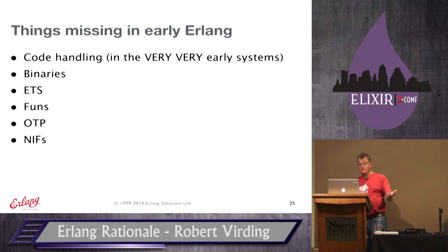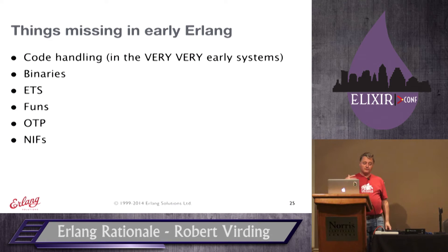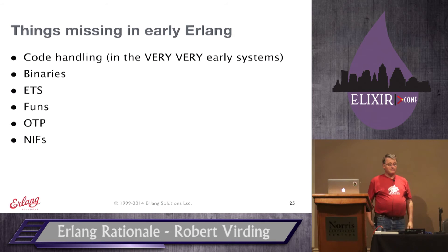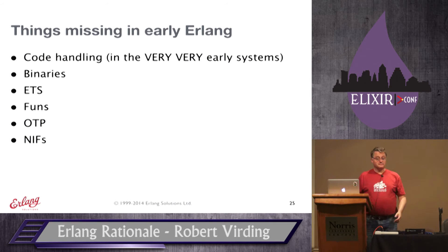There are quite a few things missing from very early Erlang systems. Code handling came in around 1990 when we started writing our own emulator — before that we were using Prolog's code handling. Binaries took a while to arrive, so the first couple of years we were sending lists of bytes. We didn't have ETS tables either — they came in later. Funs were much later. OTP came around 95-96, and NIFs are very recent. It worked anyway — but a lot of things we take for granted today just didn't exist then.